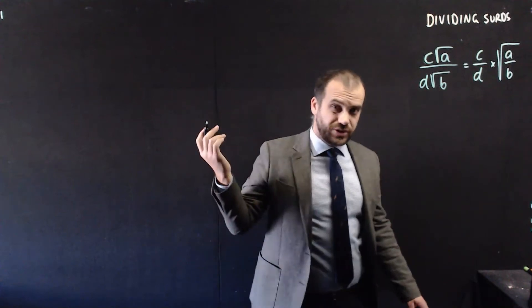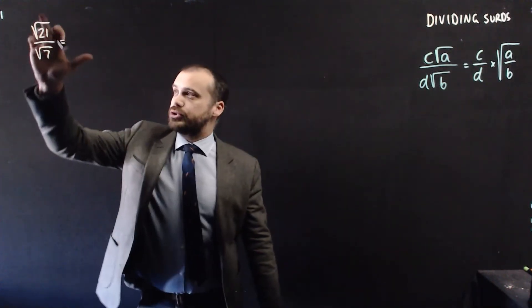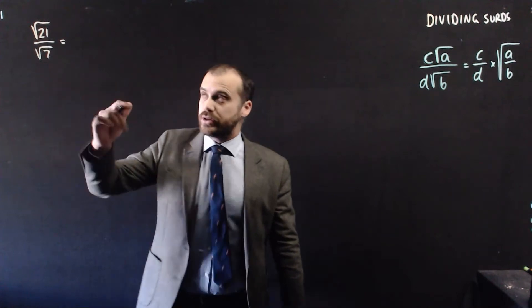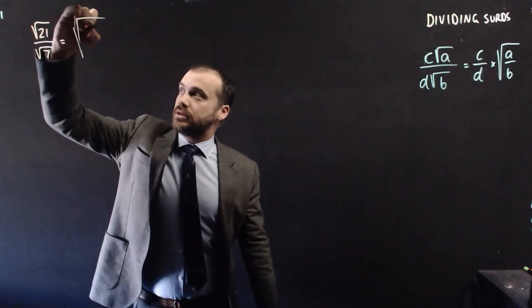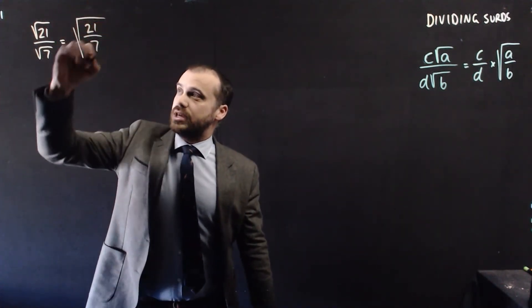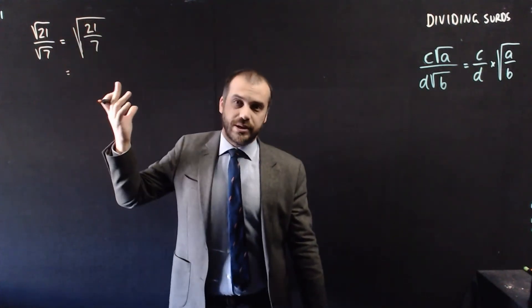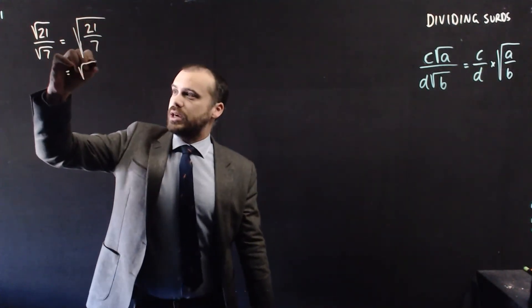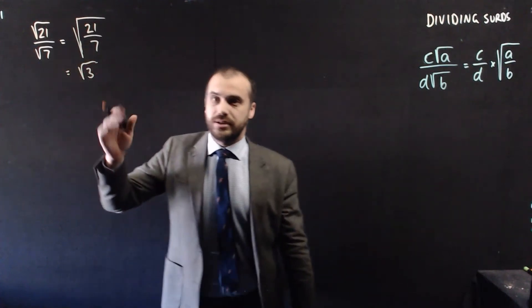So let's just do some. No numbers out the front this time, just root 21 over root 7. We can write that as root 21 over 7. 21 divided by 7 is 3, so we get root 3. It's as simple as that.